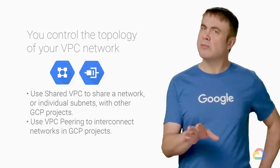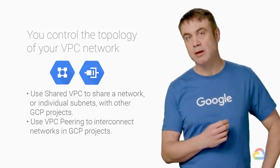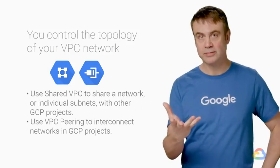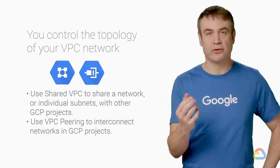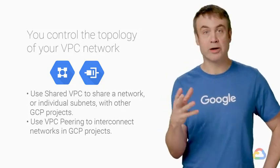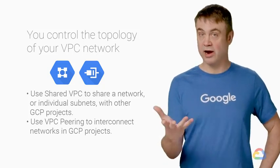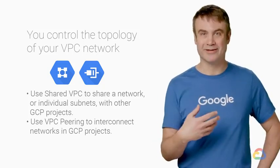VPCs belong to GCP projects. But what if your company has several GCP projects and the VPCs need to talk to each other? That's totally doable and manageable. If you simply want to establish a peering relationship between two VPCs so that they can exchange traffic, that's what VPC peering does.